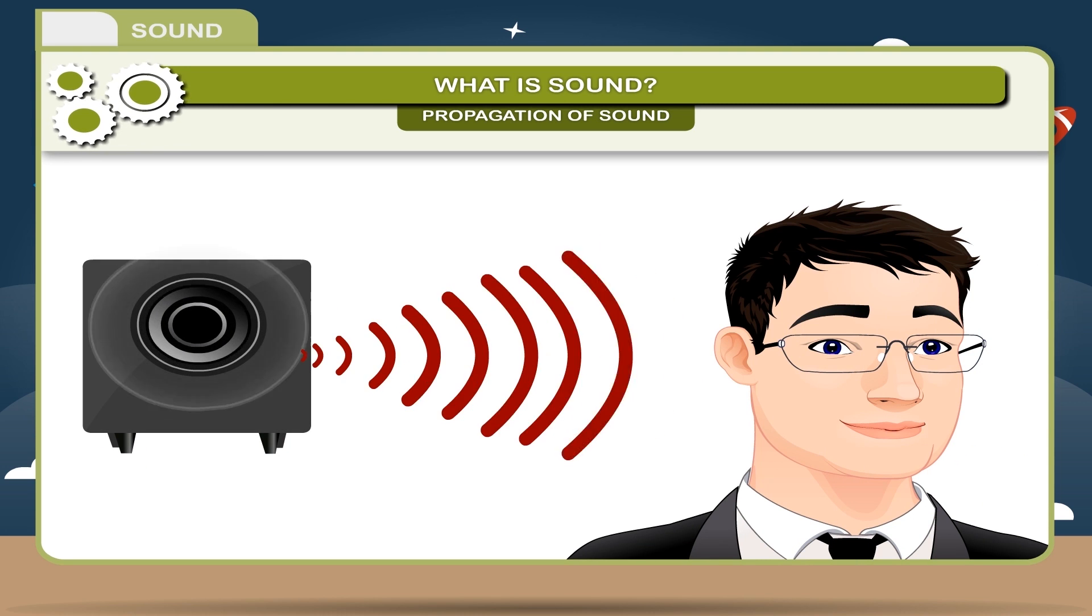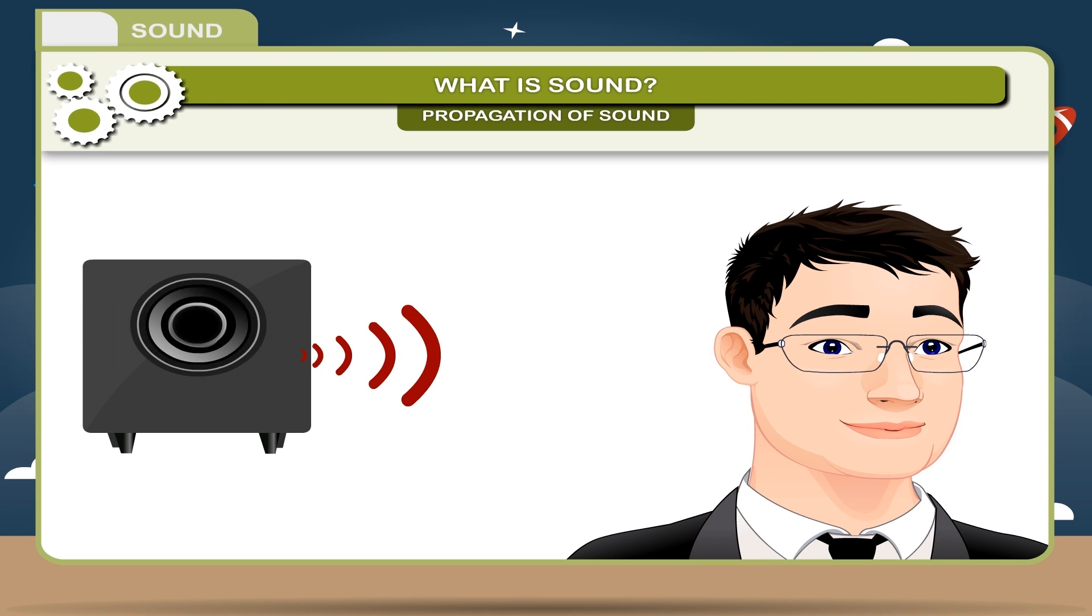In this way, the air vibrations reach out to our ear and our eardrum begins to vibrate. The vibrations of the eardrum are analyzed by the brain and we hear the sound.